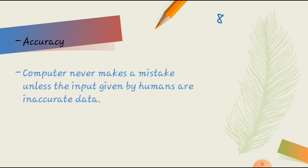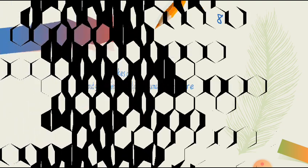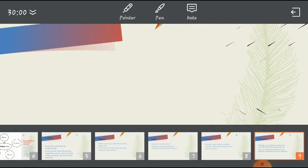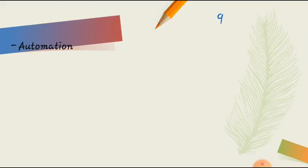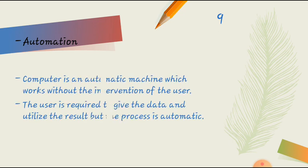We have the last feature. I have included automation as the feature of the computer. Because we all see that computer is an automatic machine. Computer is an automatic machine which works without intervention of the user. Yes, we all need to do is give an input instruction to the computer. And the processing is done by the computer itself.